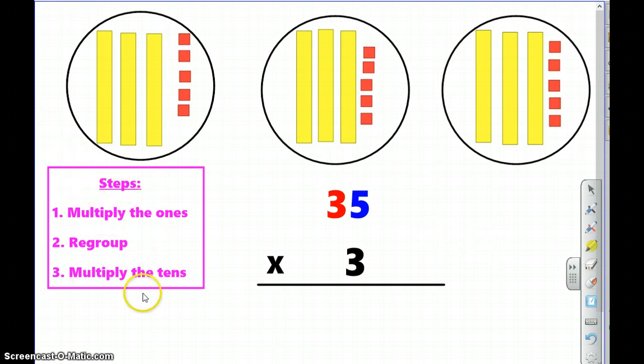So, again, we have three easy steps. Step one is to multiply the ones place. We're going to multiply three by the ones place and by the tens place. Step two is regroup only if necessary. And then step three is to multiply the tens place. Just like before, we're multiplying the three by each of these digits.